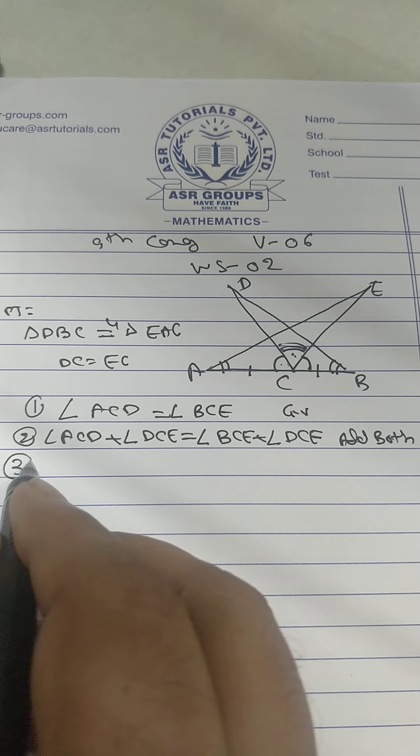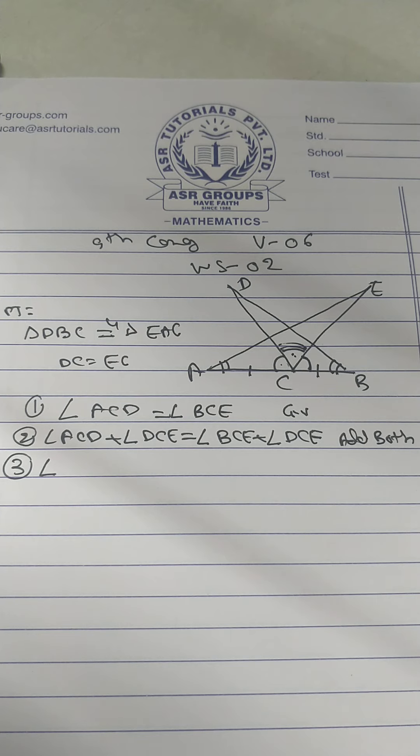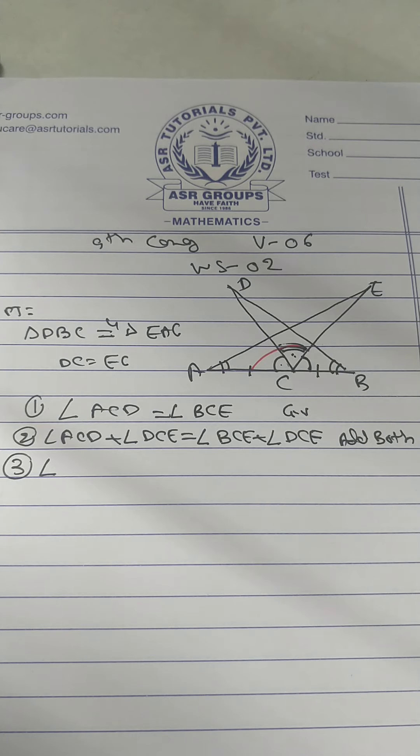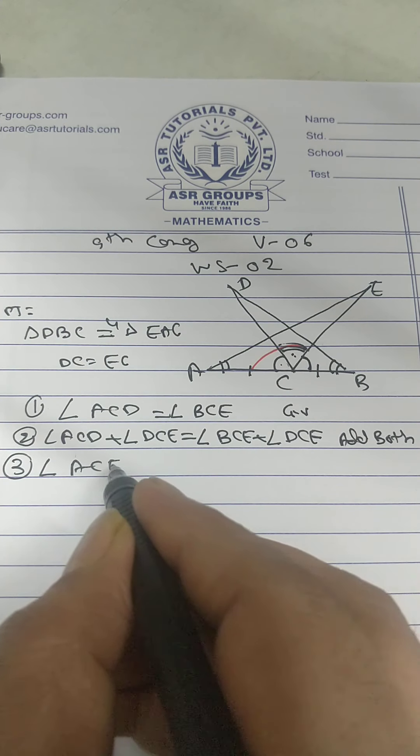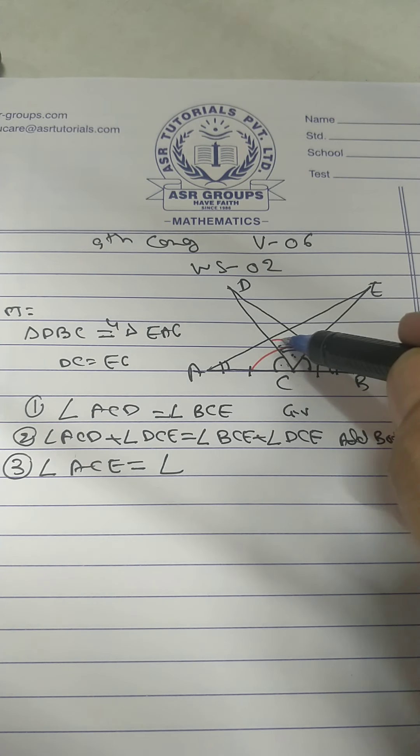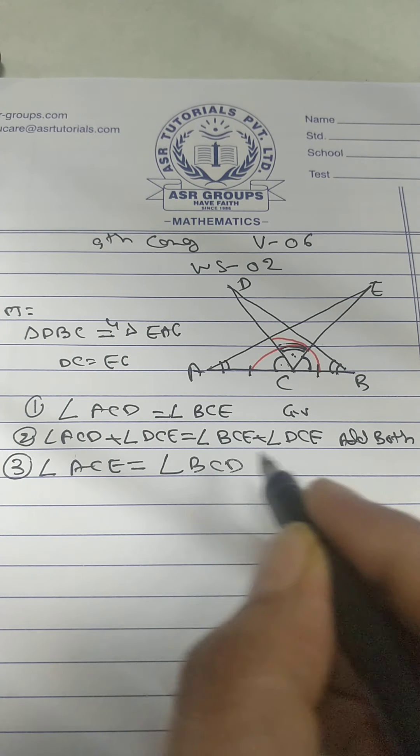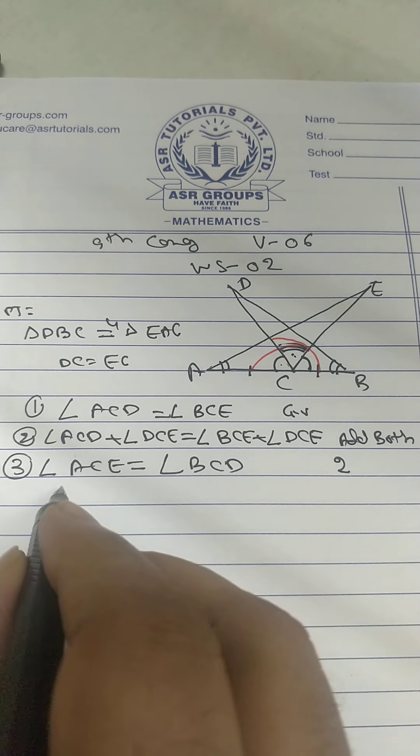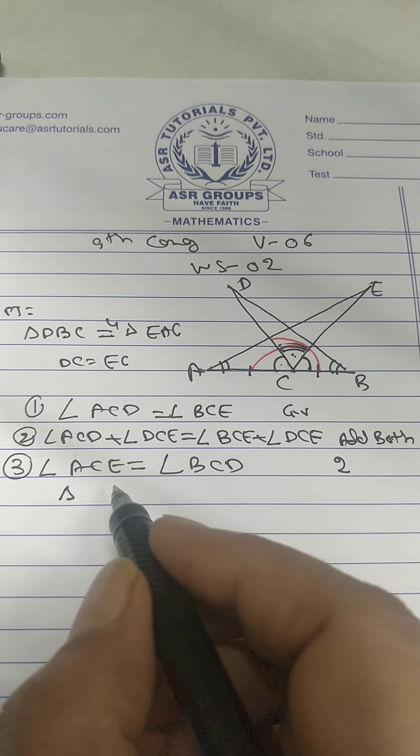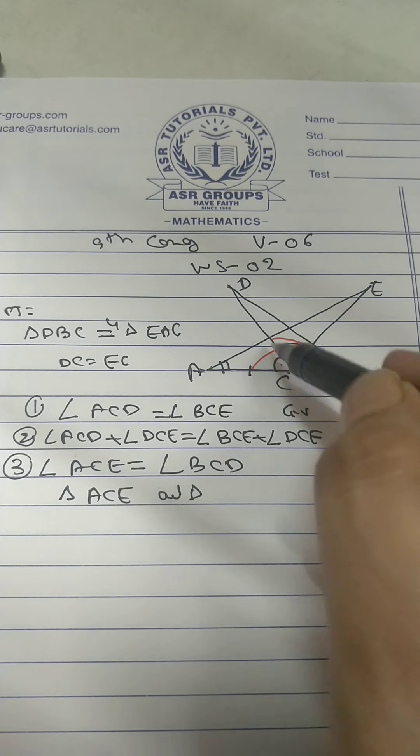So that gives me angle ACE equal DCB from statement 2. Now take triangle ACE and BCD.